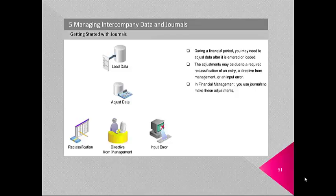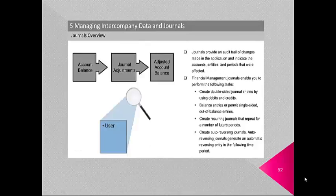During a financial period, you may need to adjust data after it is entered or loaded. Adjustments may be due to required reclassification, a directive from management or an input error. In Financial Management, you use journals to make these adjustments. Journals provide an audit trail of changes made in the application and indicate the accounts, entities and periods affected. Financial Management journals enable you to create double-sided journal entries using debits and credits, balance entries or permit single-sided out-of-balance entries, create recurring journals, and create auto-reversing journals that generate an automatic reversing entry in the following time period.